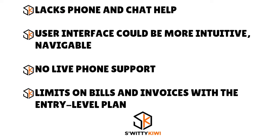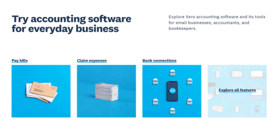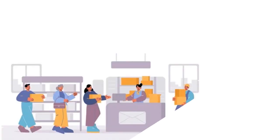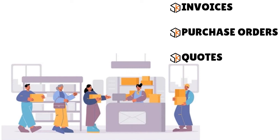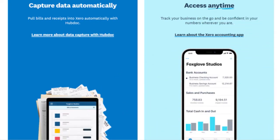Xero lacks phone and chat help — the user interface could be more intuitive and navigable, there is no live phone support, and they have limits on bills and invoices with the entry-level plan. When you think about Xero, it's a software tool that simplifies standard accounting for small businesses. You have double-entry accounting, financial reporting, bills and expenses, inventory and payroll management. You can create records for customers, suppliers, and employees, then use these records in standard customizable transactions such as invoices, purchase orders, and quotes. Xero also lets you manage fixed assets — something competitors don't offer.